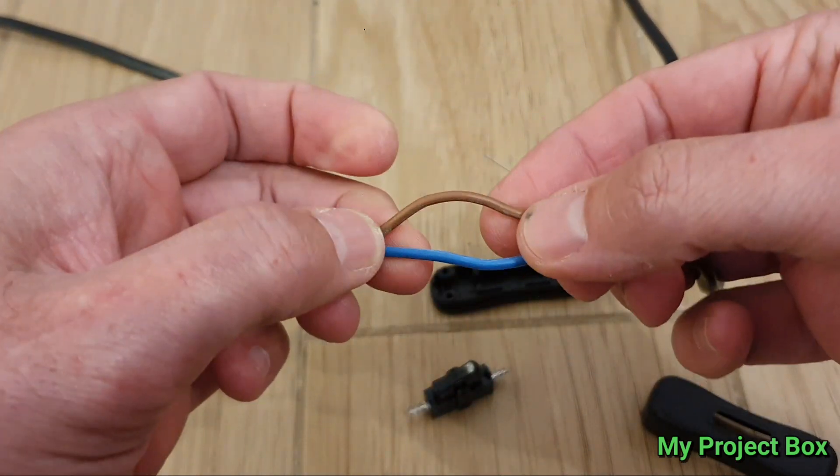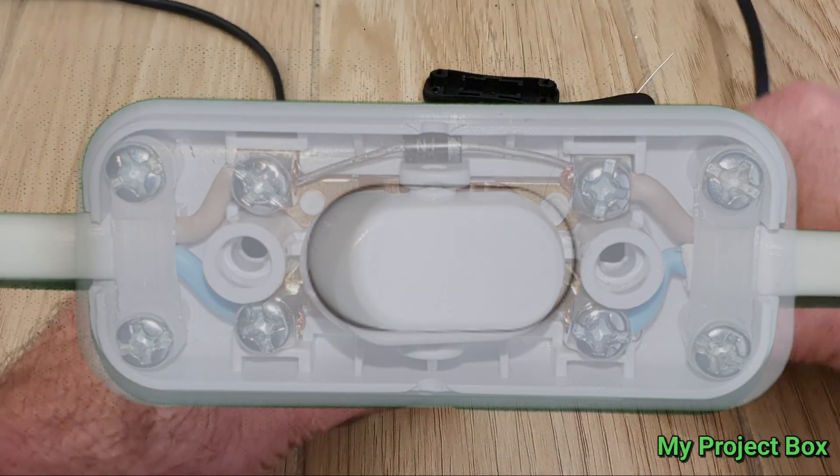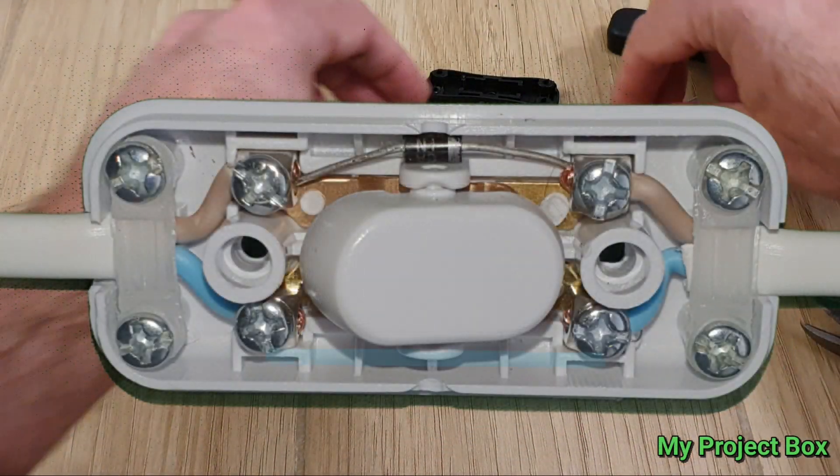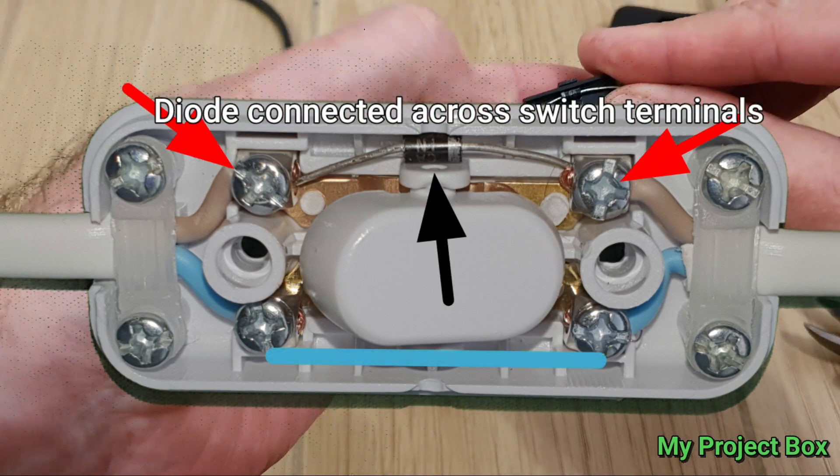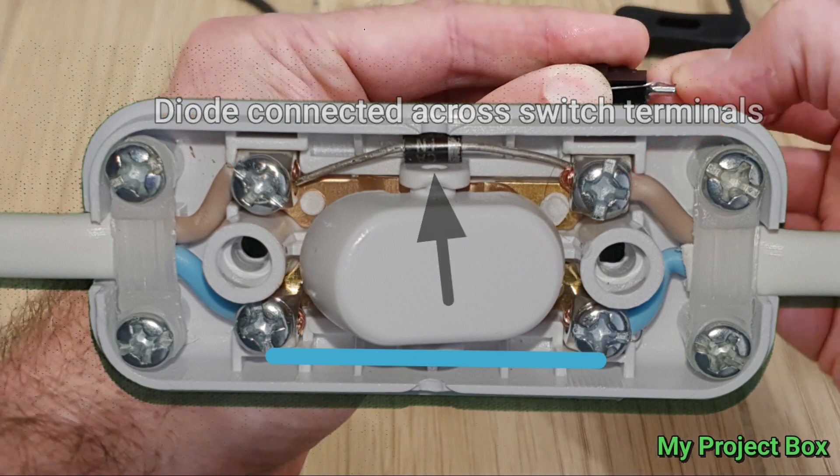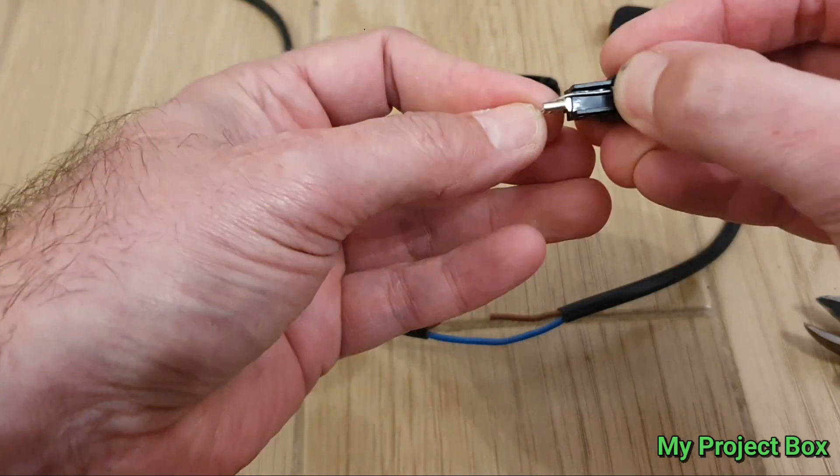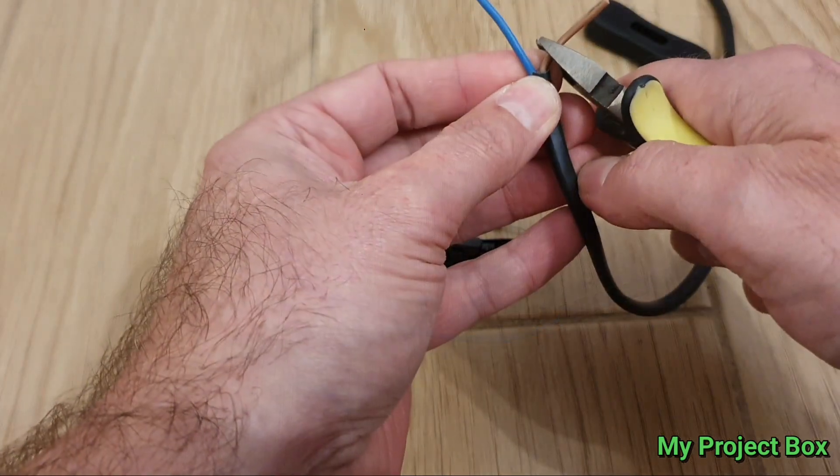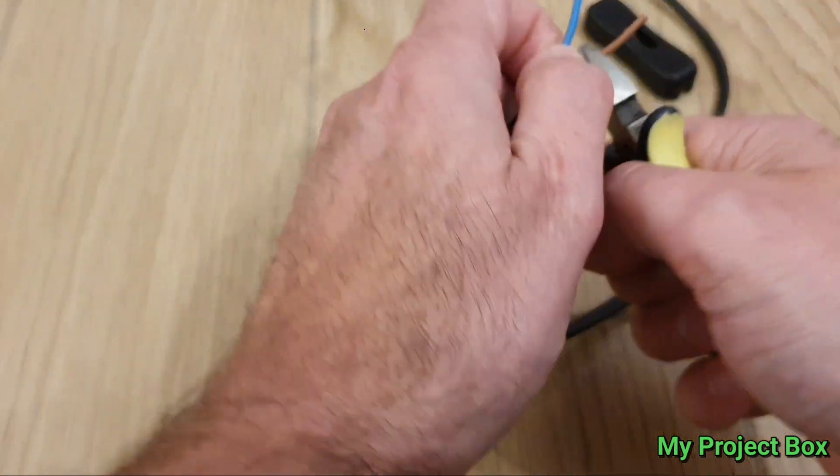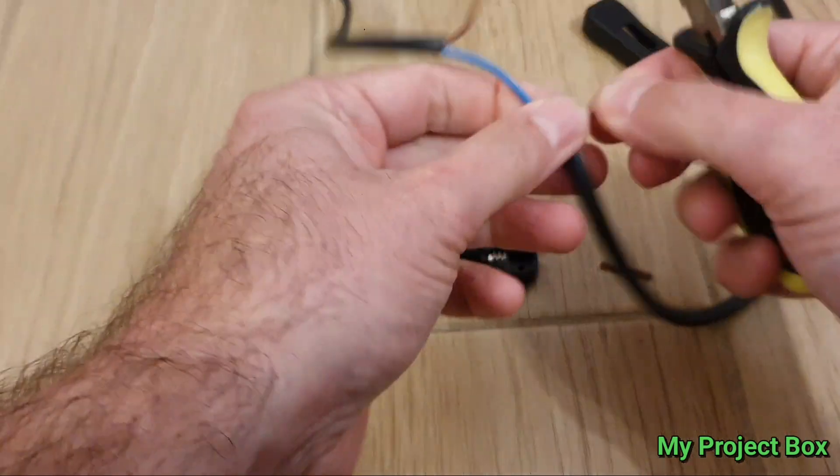We'll just chop that live wire in half now. In hindsight I should have bought one of these inline switches that has screw terminals instead of crimp connections, but this little switch is quite compact and it only breaks the live, so it makes for a very small inline compact switch.